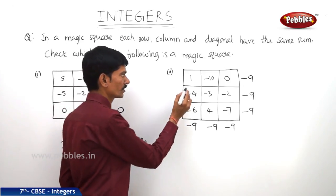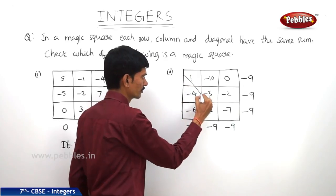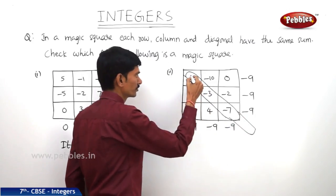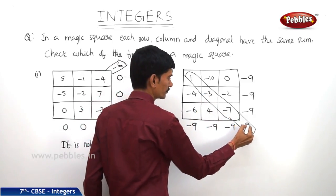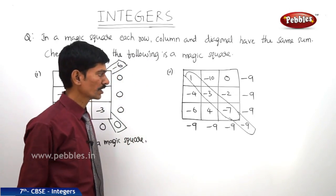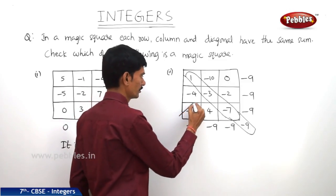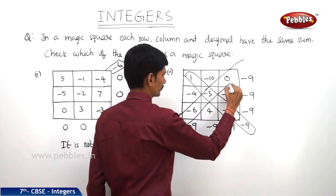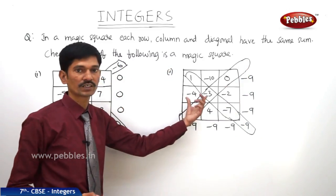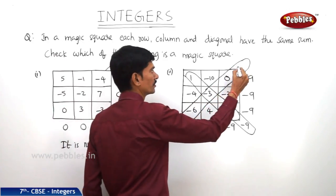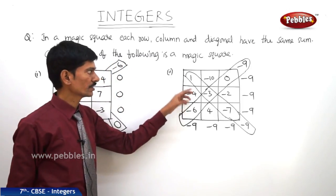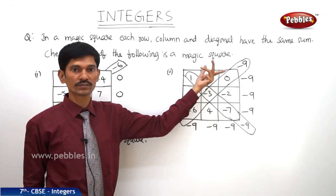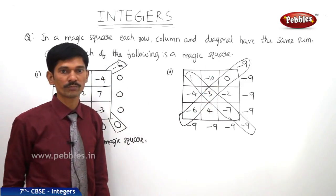Now let us check the two diagonals. In the first diagonal, 1 minus 3 is minus 2, and minus 2 minus 7 is minus 9. So we got the same result, minus 9. And in the second diagonal, the numbers are minus 6, minus 3 and 0. If we add these numbers, minus 6 minus 3 is minus 9. So in this square, each row, each column, and even the two diagonals have the same sum, that is minus 9. So this square is said to be a magic square.